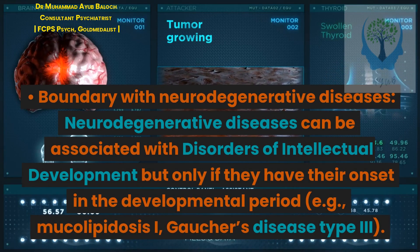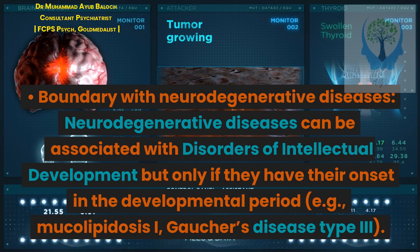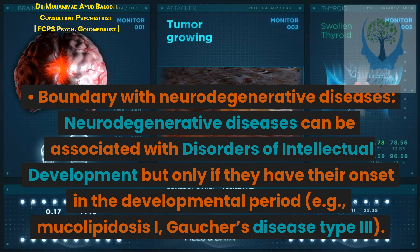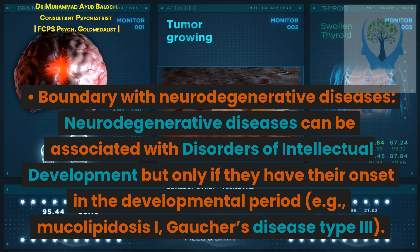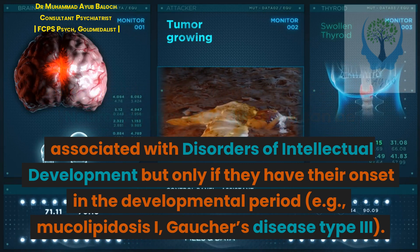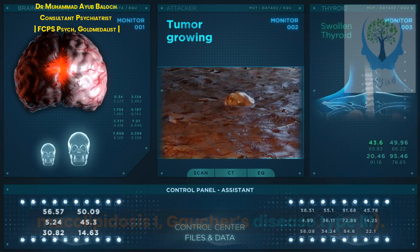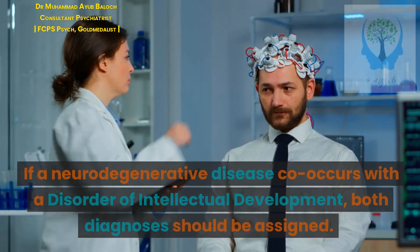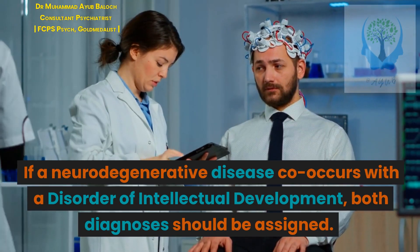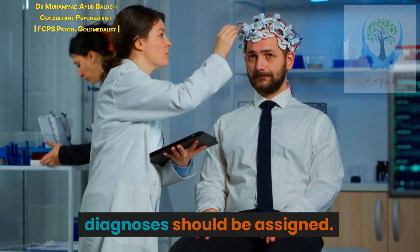Boundary with neurodegenerative diseases. Neurodegenerative diseases can be associated with disorders of intellectual development, but only if they have their onset in the developmental period — for example, mucolipidosis I or Gaucher's disease type 3. If a neurodegenerative disease co-occurs with a disorder of intellectual development, both diagnoses should be assigned.